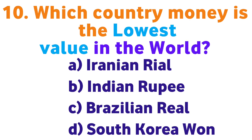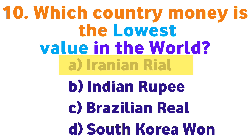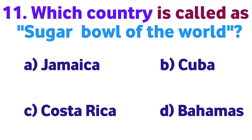Question number ten: Which country's money has the lowest value in the world? Option A: Iranian Rial, B: Indian Rupee, C: Brazilian Real, D: South Korean Won. Correct answer is A: Iranian Rial.